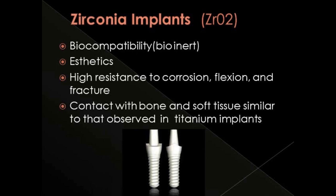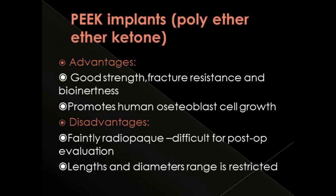Zirconia is a ceramic material used to fabricate the entire implant or as a coating. Zirconia implants offer advantages of biocompatibility, bioinertness, high aesthetics, high resistance to corrosion, flexion, and fracture, with bone and soft tissue contact similar to titanium implants. PEEK implants — polyether ether ketone — have good strength, fracture resistance, and bioinertness, and promote human osteoblastic cell growth. Disadvantages include being faintly radio-opaque, making post-op evaluation difficult, and restricted length and diameter range.